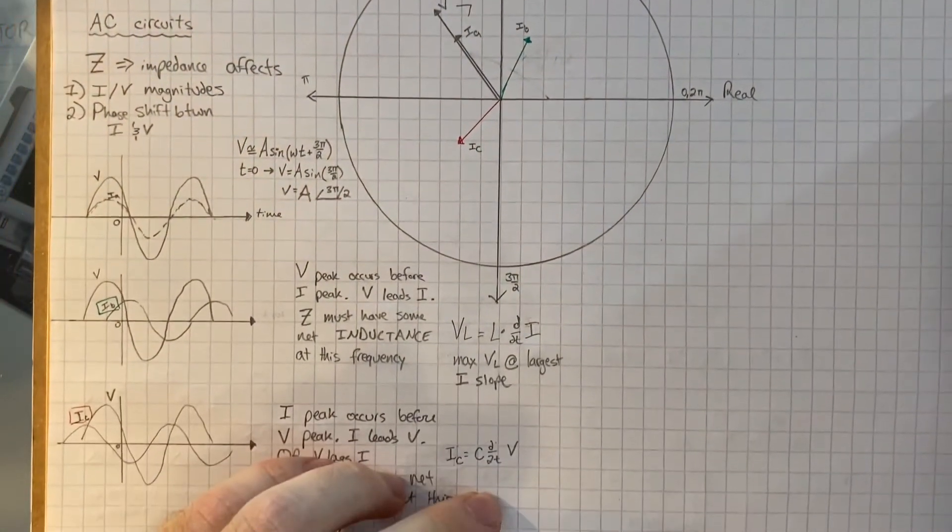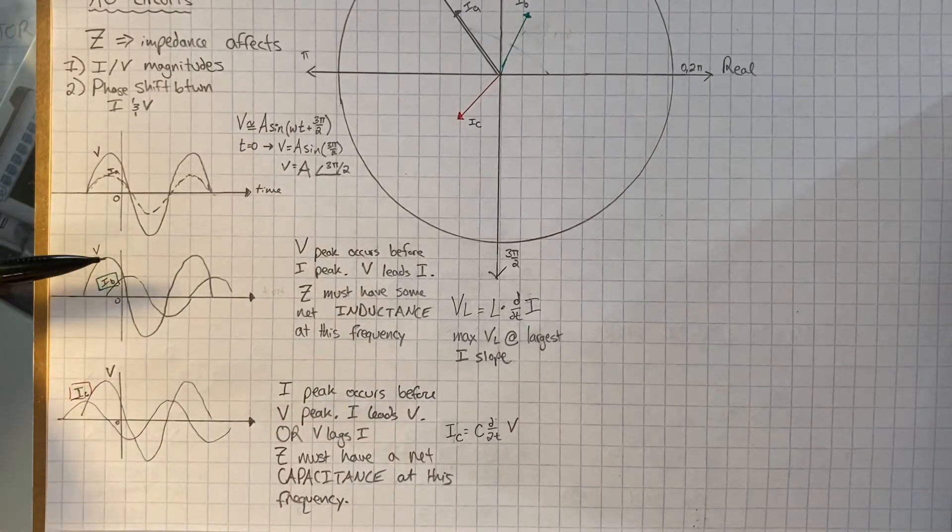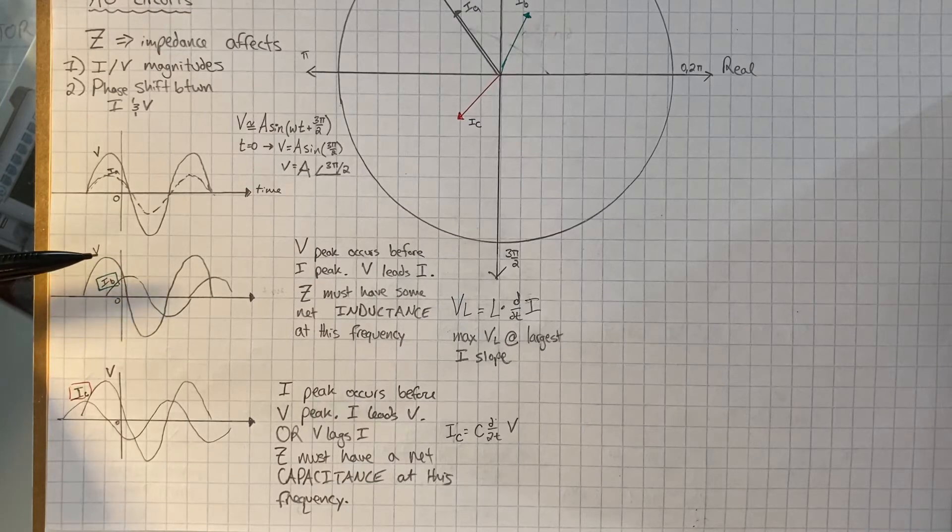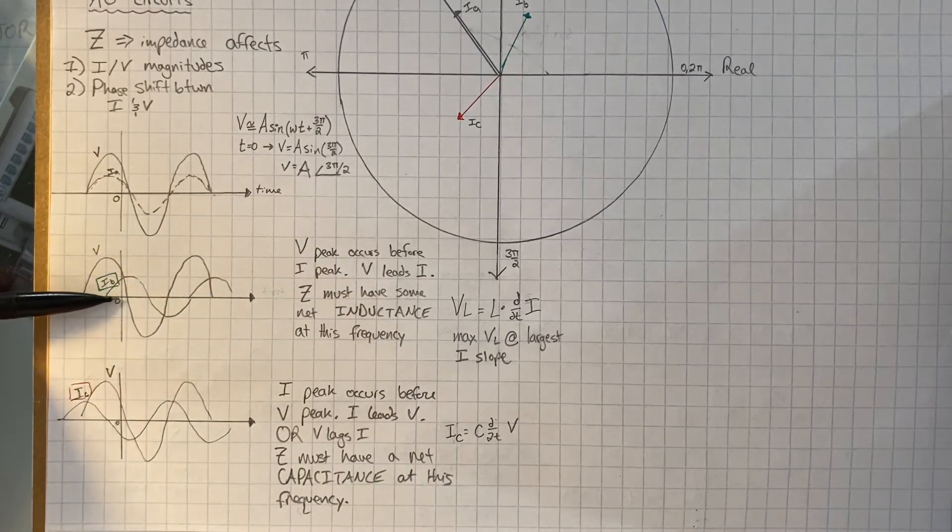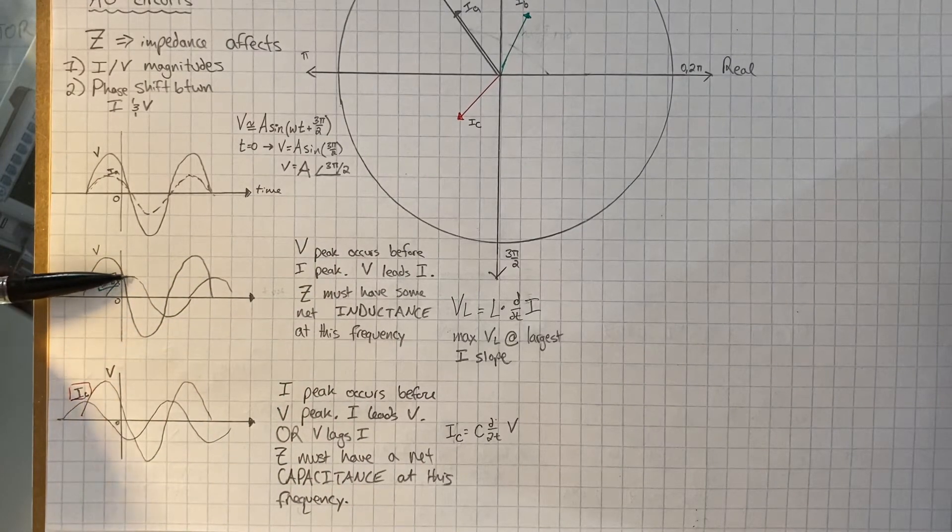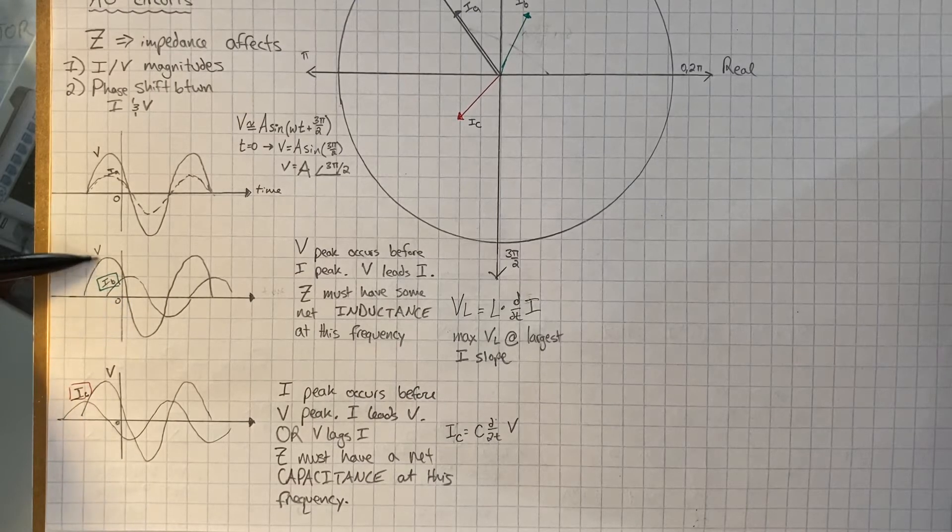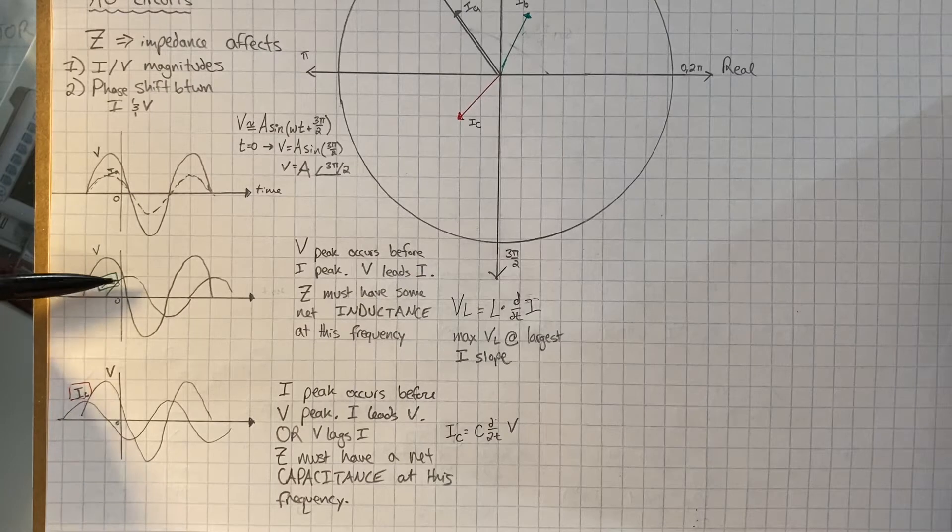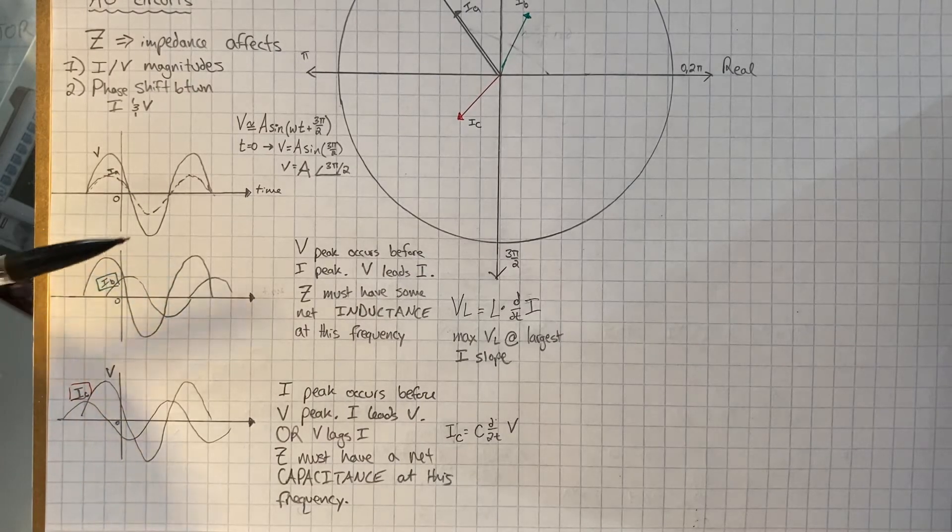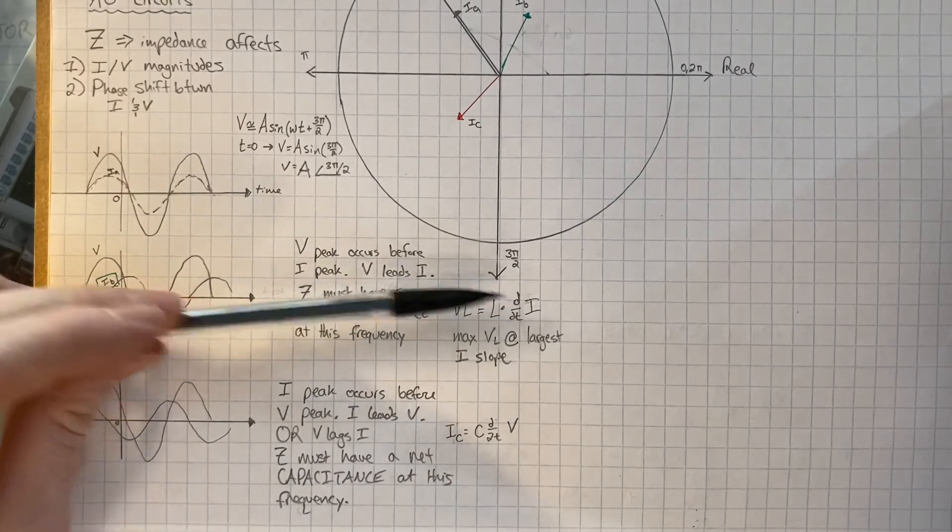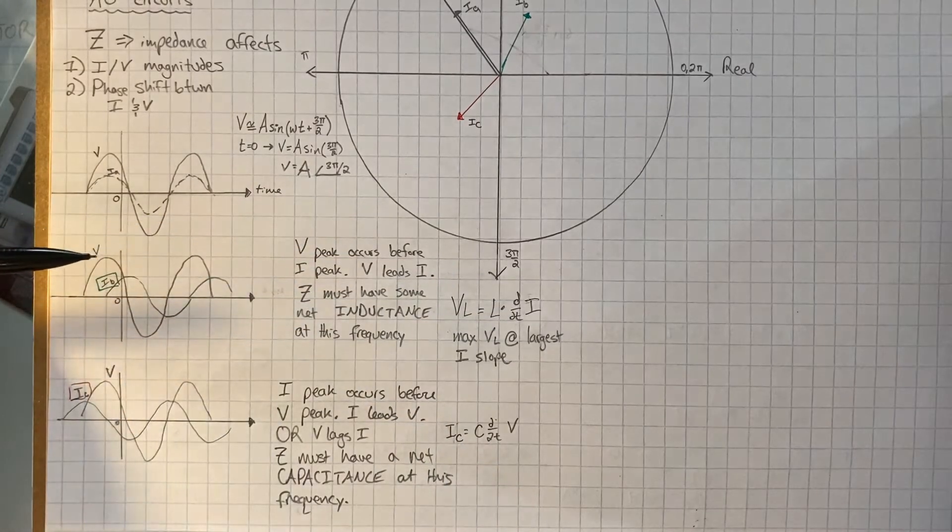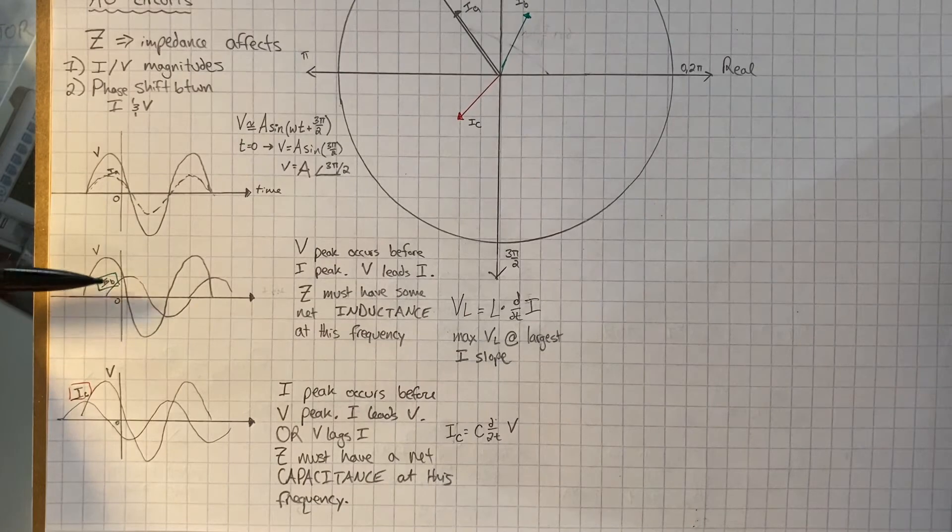Now, say we observe a relationship like this, where the voltage peak occurs before the current peak. That means that the voltage leads the current. So at time zero, we have a current peak, and then at time negative something, we have this voltage peak. So the voltage appears before the current. And that is a giveaway that we have some inductive impedance. Recall for an inductor, the voltage across it is the inductance times the derivative of the current. So we can see that the max voltage occurs at the maximum slope of the current.